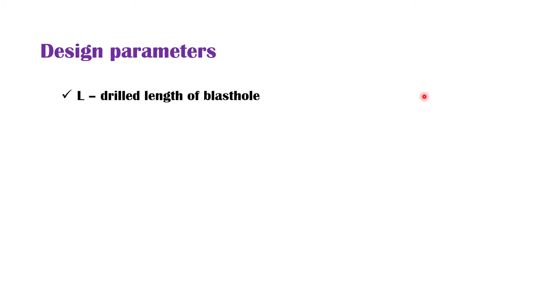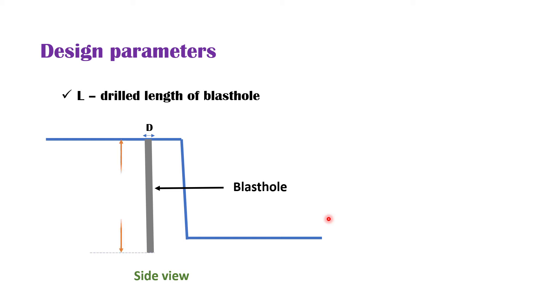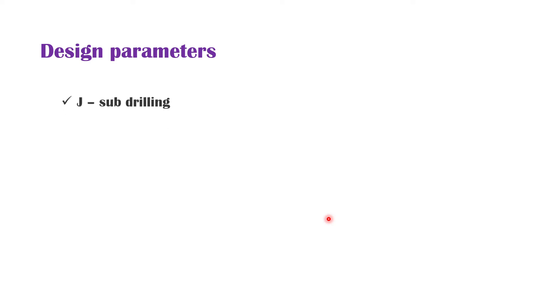The next parameter is the drill length of blast hole. This is the open cast bench. This is a vertical drill hole which has been drilled. L is the length of the blast hole.